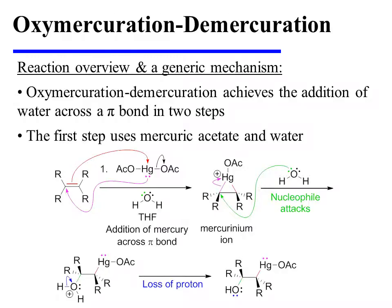The oxymercuration-demercuration of alkenes achieves the addition of water across a pi bond with Markovnikov regiochemistry in two steps. The first step uses mercuric acetate and water as reagents. THF, or tetrahydrofuran, is a common solvent. The net result of this first step will be the addition of mercury and a hydroxyl group across the pi bond.